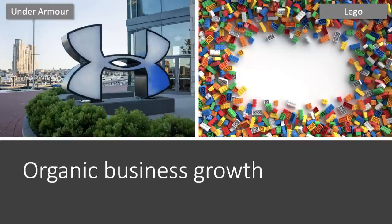Let's move on to different types of business growth. Organic business growth, also known as internal growth, comes from expansion from within a business — for example by expanding the product range or the number of business units and locations. For most businesses, organic is the only expansion method used. Two great examples are Under Armour, the sports retail business, and Lego, which has some claim to be the world's biggest construction company.